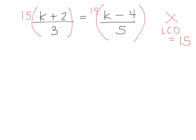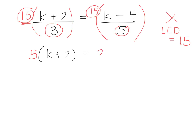What happens when I multiply by the lowest common denominator? 15 divided by 3 is 5, so I have 5 times (k plus 2). And then 15 divided by 5 is 3, giving 3 bracket (k minus 4). So now I have brackets.